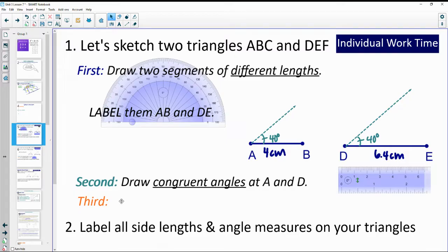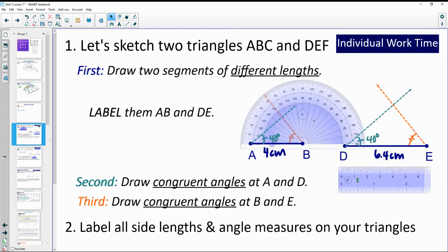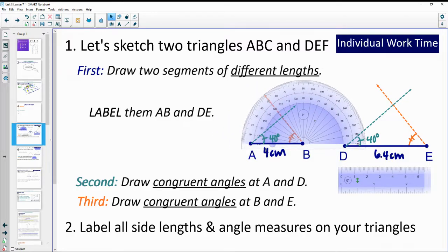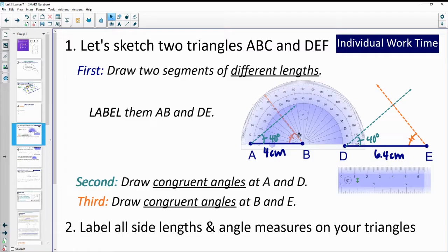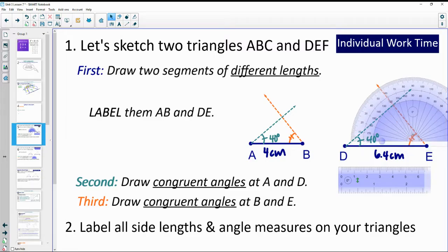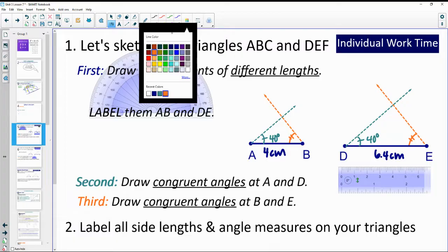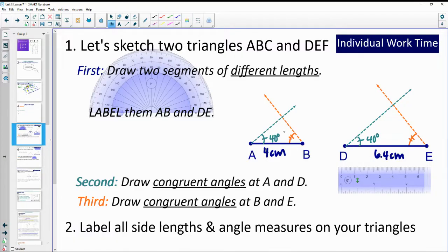Next, draw congruent angles at B and E. So again, you can choose whatever you want. I did 50 degrees. So set my protractor here, and then measured that angle at 50, moved my protractor over to E, and also measured that angle at 50 degrees. So whatever you decide, just make sure that those two are the same.